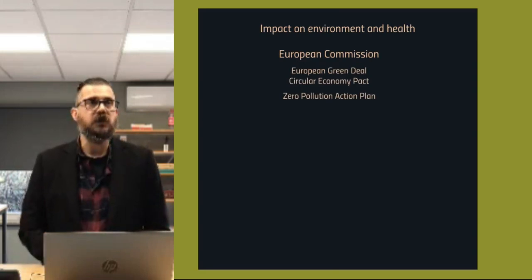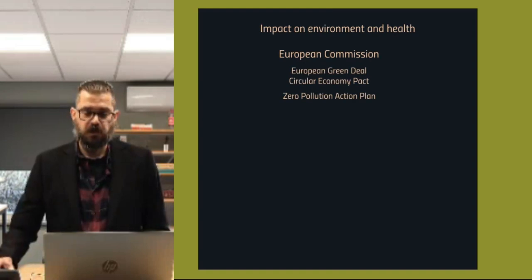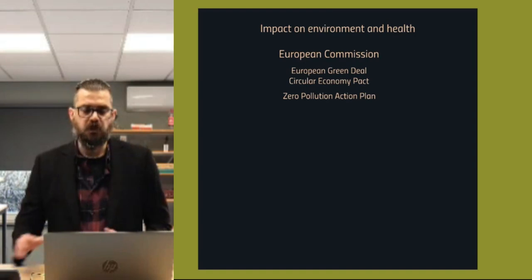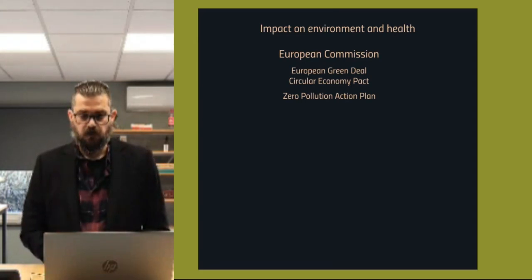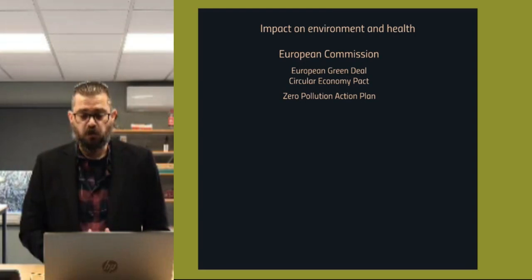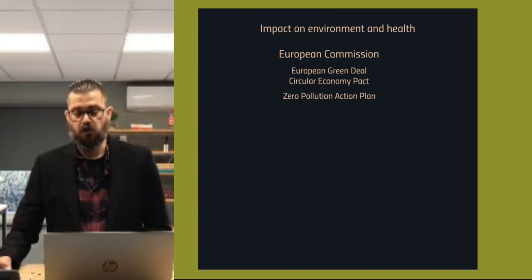The European Commission has been working on the European Green Deal and the Circular Economy Pact. There is also the Zero Pollution Action Plan. The idea of all these legislations is to reduce pollution by 2030 by 30%. The full extent of the timeline would prevent a potential release of 500,000 metric tons of microplastics being released in the next 20 years.